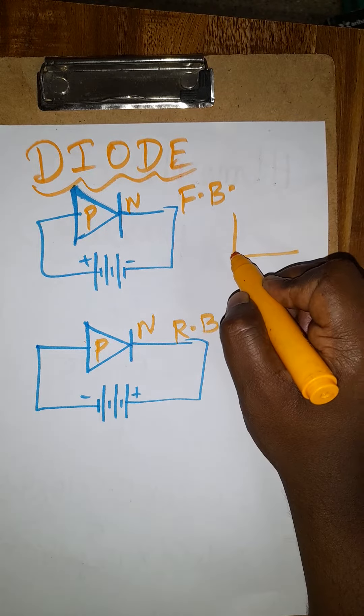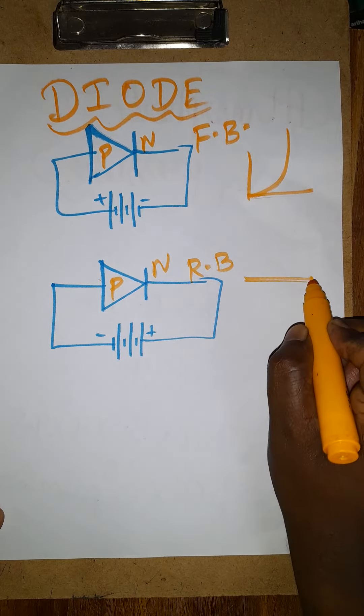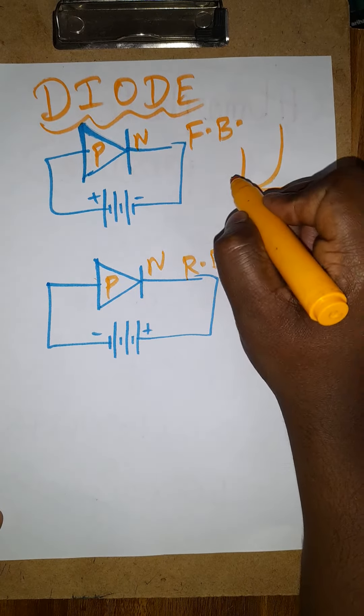The graph will come like this. For reverse bias, the level will go to the saturated level suddenly. Forward bias is going to give us milliampere.